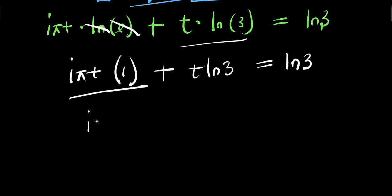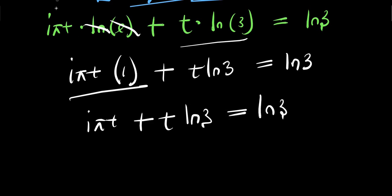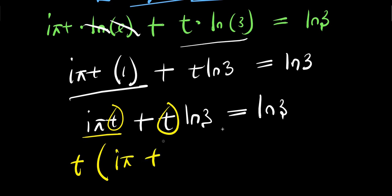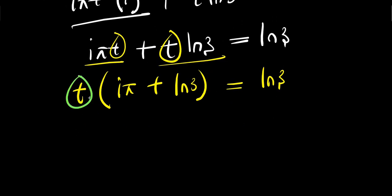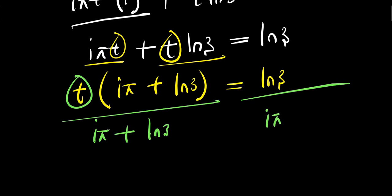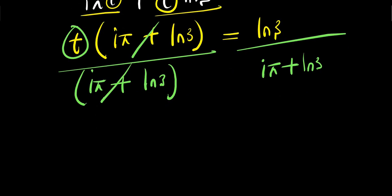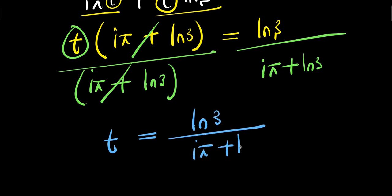Multiplying this out, we have i·π·t plus t times the natural log of three equals the natural log of three. We factor out t, giving t times the quantity i·π plus the natural log of three, equals the natural log of three. Dividing both sides by i·π plus the natural log of three, we get t equals the natural log of three divided by i·π plus the natural log of three.